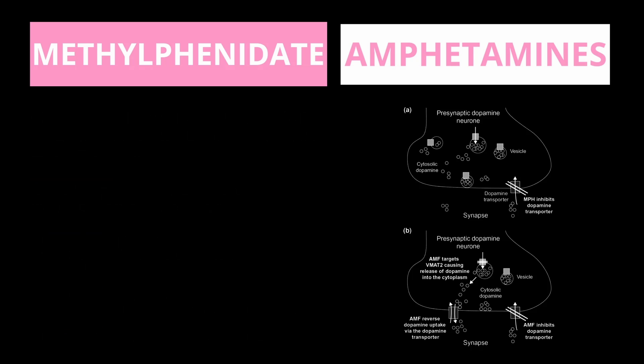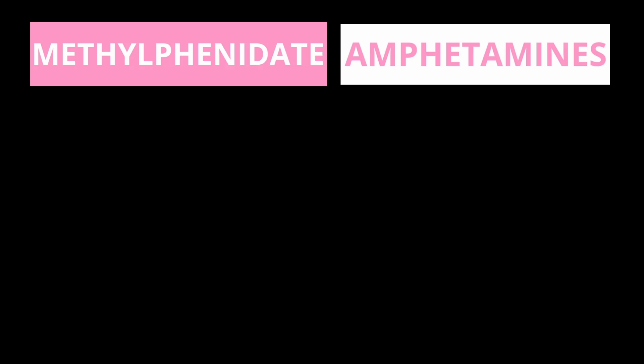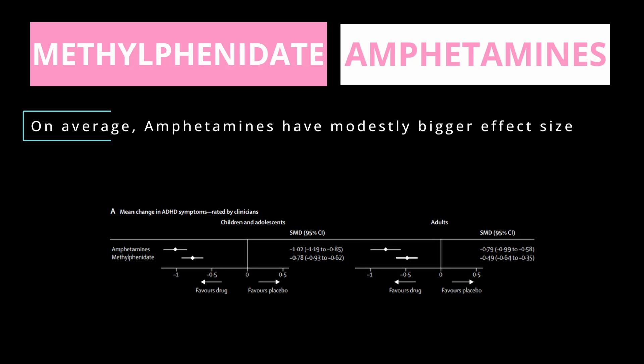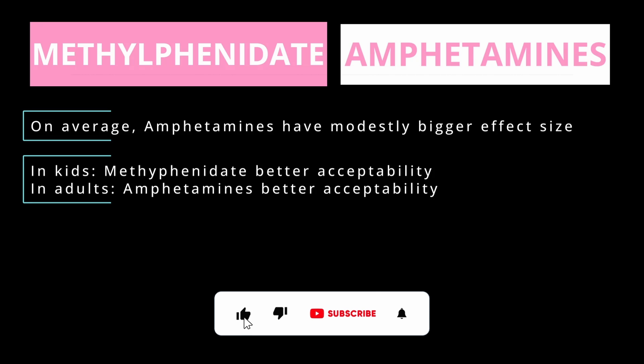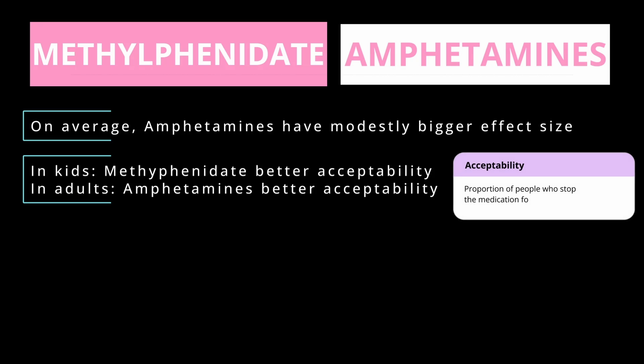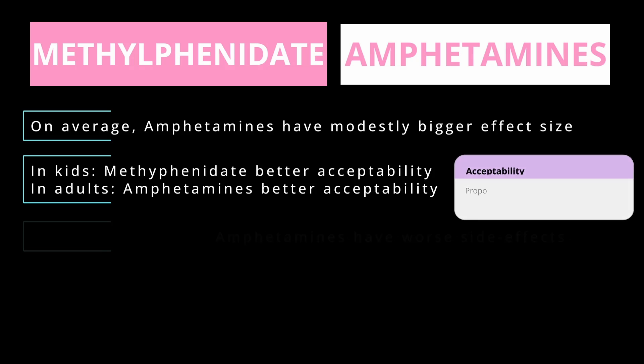Now let's look at the clinical differences between amphetamines and methylphenidate. On average, amphetamines have a better effect size than methylphenidate, but it's typically pretty modest. About 40% of patients respond really well to both, about 28% respond better to amphetamines, and 15% respond better to methylphenidate. A big meta-analysis found that methylphenidate had better acceptability in kids, and amphetamines had better acceptability in adults. Acceptability is a metric measuring the proportion of participants who left the study for any reason — given the abuse and euphoria potential of these drugs, it's not the best metric for measuring how patients do on a medication.